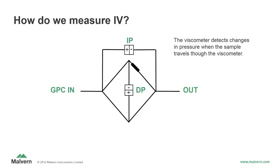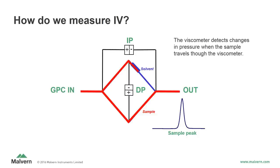Here is an animation of what happens in the viscometer as a sample passes through. Initially, there is only mobile phase in all capillaries, providing a baseline reading and a differential pressure of zero. When the sample is introduced, it is split between the positive and negative sides of the viscometer bridge. The negative side contains a delay reservoir, which holds the sample and allows the solution pressure of the sample in the positive side to be compared to that of the solvent on the negative side. This creates a positive peak in the DP signal corresponding to the sample. The sample elutes and the viscometer signal returns to baseline until the sample held in the delay reservoir finally begins to elute, creating a negative peak. Once the sample elutes from the delay reservoir, the DP signal returns to baseline.